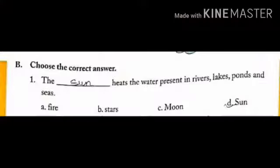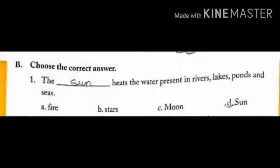Choose the correct answer. Number 1: The dash heats the water present in rivers, lakes, ponds and seas. Options are fire, stars, moon and sun. The correct answer is sun.